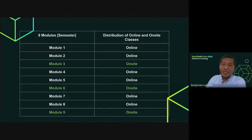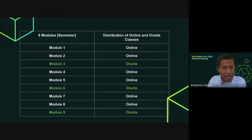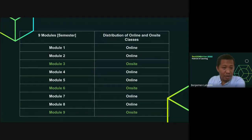For undergraduate programs, one semester has nine modules — three per term: three for prelim, three for midterm, and three for finals. Based on our discussion, modules one and two will be delivered online, and module three shall be delivered on-site. Or part of module three will be delivered on-site, especially those parts that cannot be delivered online — if the teacher wishes, some parts can be delivered online.